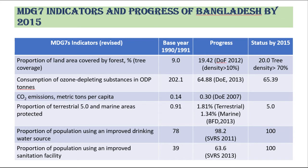At present, there is only 19.4 percent of land in Bangladesh having tree cover with a density of 10 percent and above. Based on the spatial dimension, the area having tree cover is much closer to the target set by the government, but the density is much less than the target — less than 70 percent. Data shows that at present the proportion of territorial and marine areas protected is 2.3 percent, which is much less than the target of 5 percent.